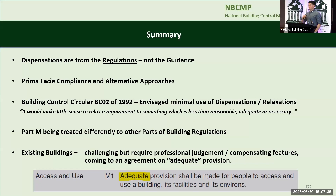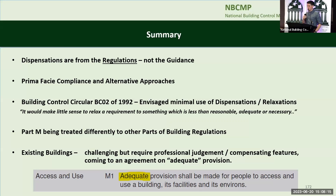Building Control Circular 02 of 1992 is a fantastic document — it talks through the entire building control process and the idea behind the building regulations. It states: 'It would make little sense to relax a requirement to something which is less than reasonable, adequate or necessary.' Part M is being treated far differently than any other building regulation. We have to get it out of our minds that Part M is for people with disabilities — it's for people. Existing buildings are challenging, but that's where designers really excel — a bit of creativity, professional judgment, some compensating features, and you can come to an agreement on what is adequate. M1: adequate provision shall be made for people to access and use a building, its facilities and environs. Thank you very much.